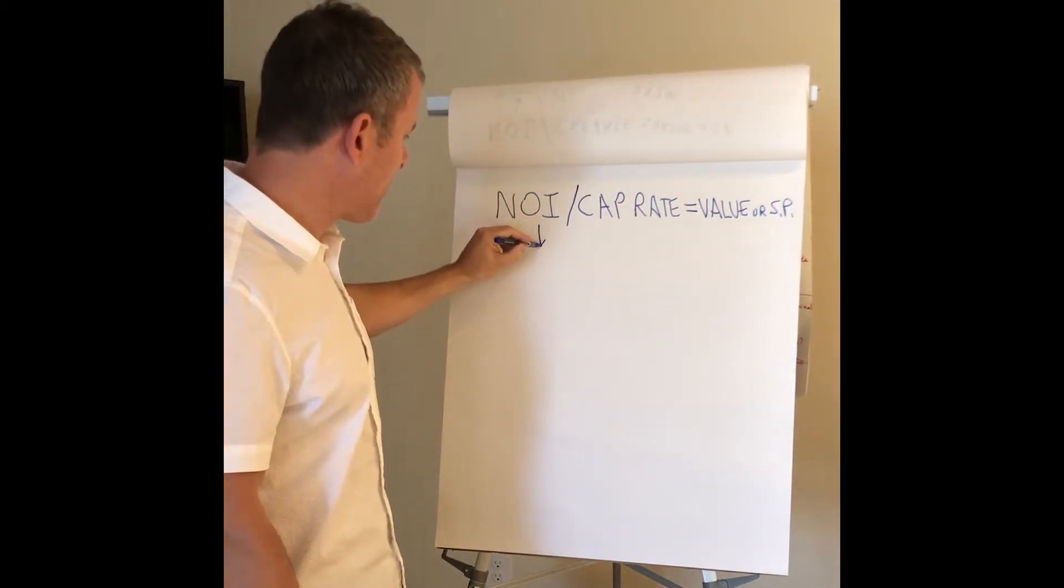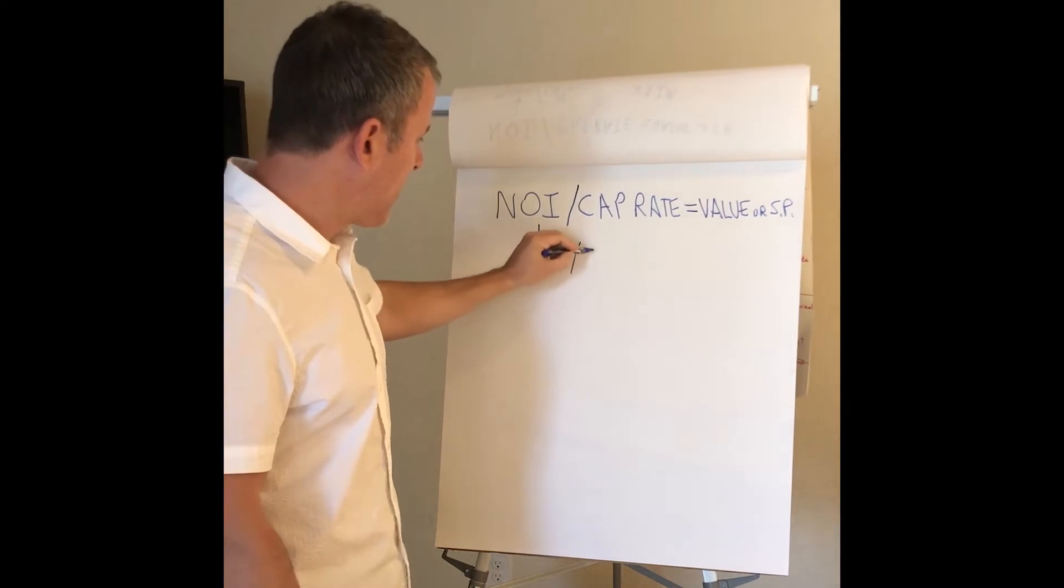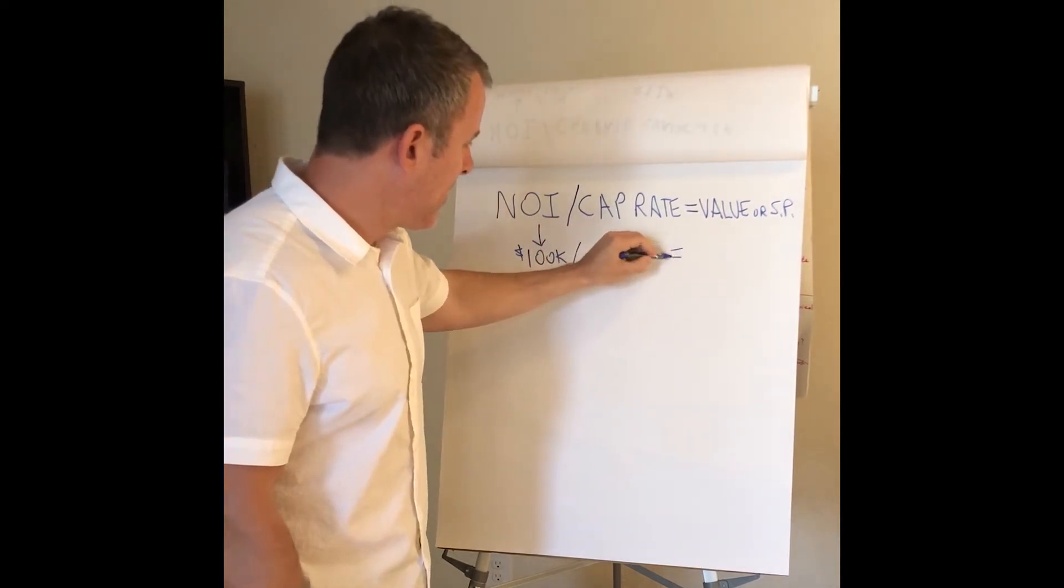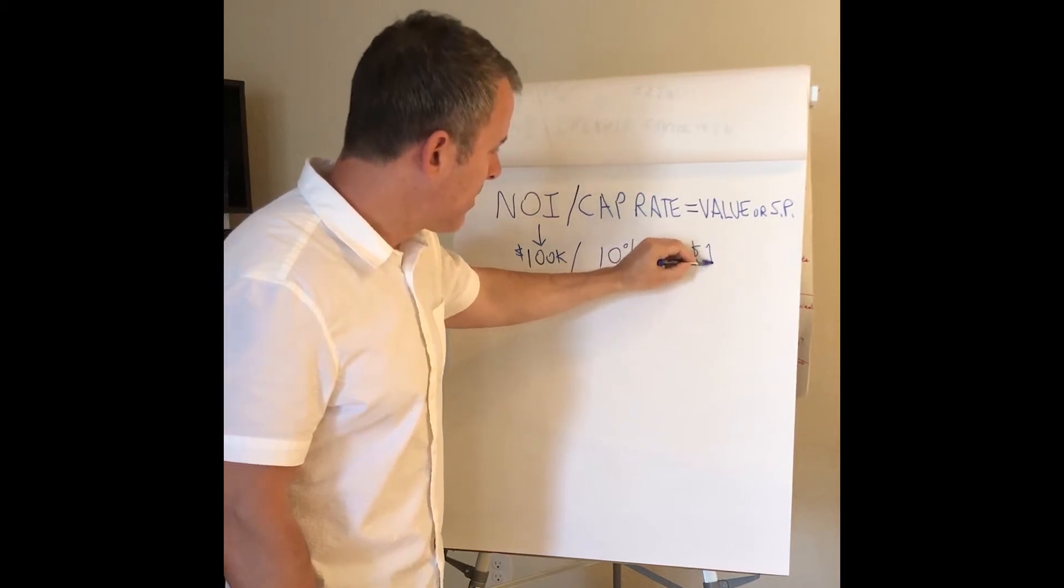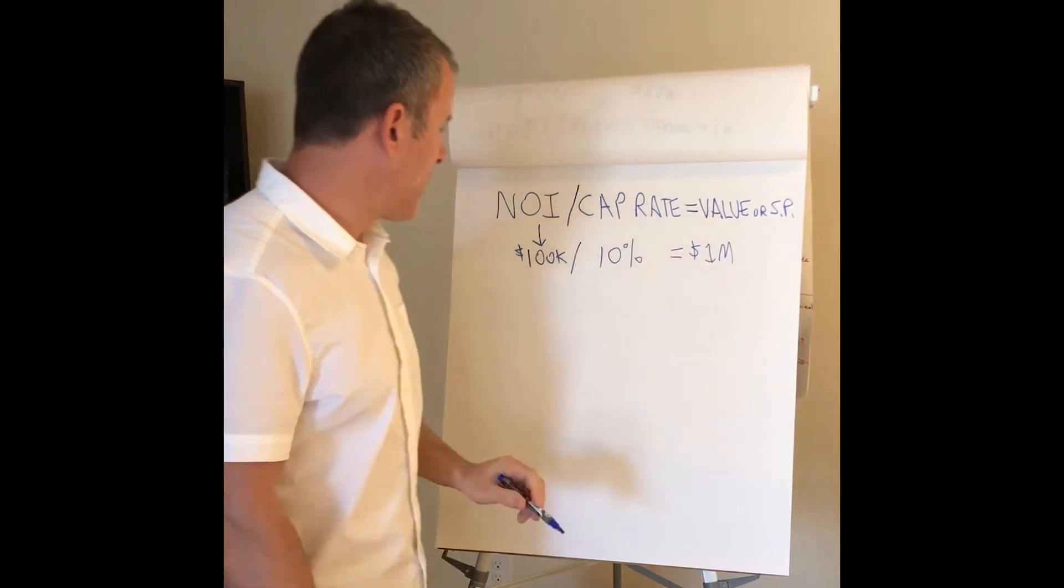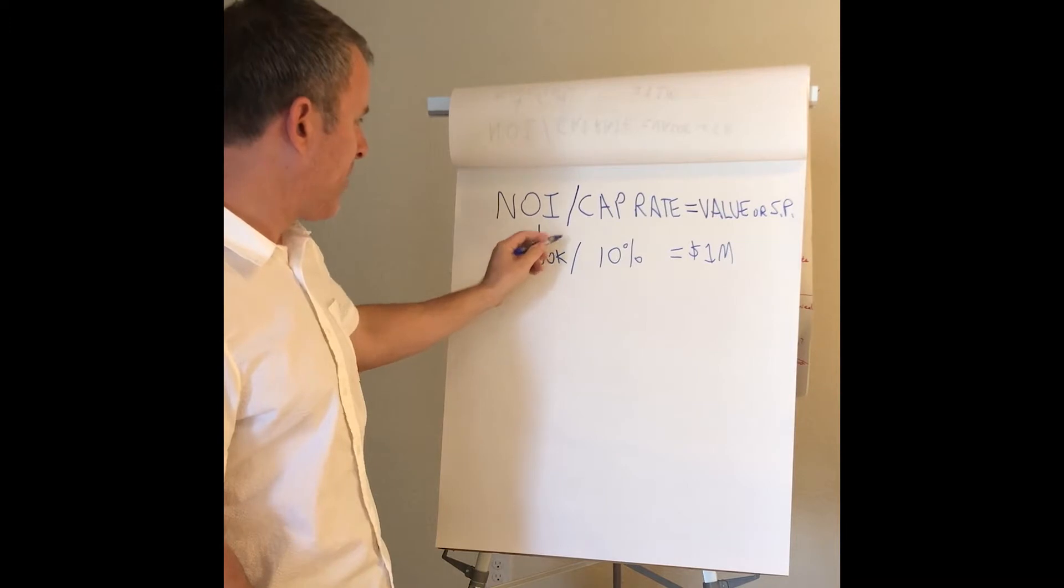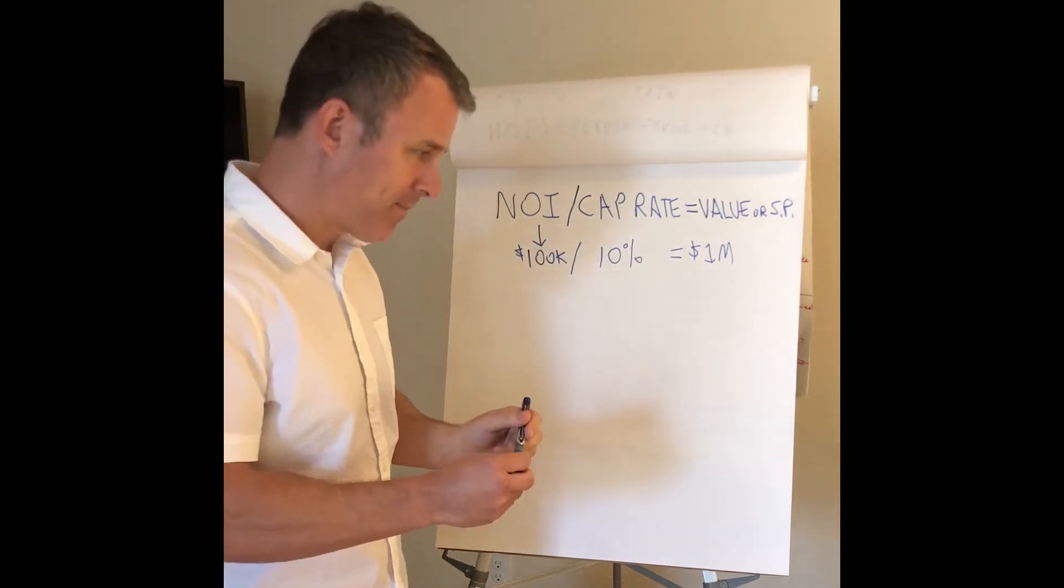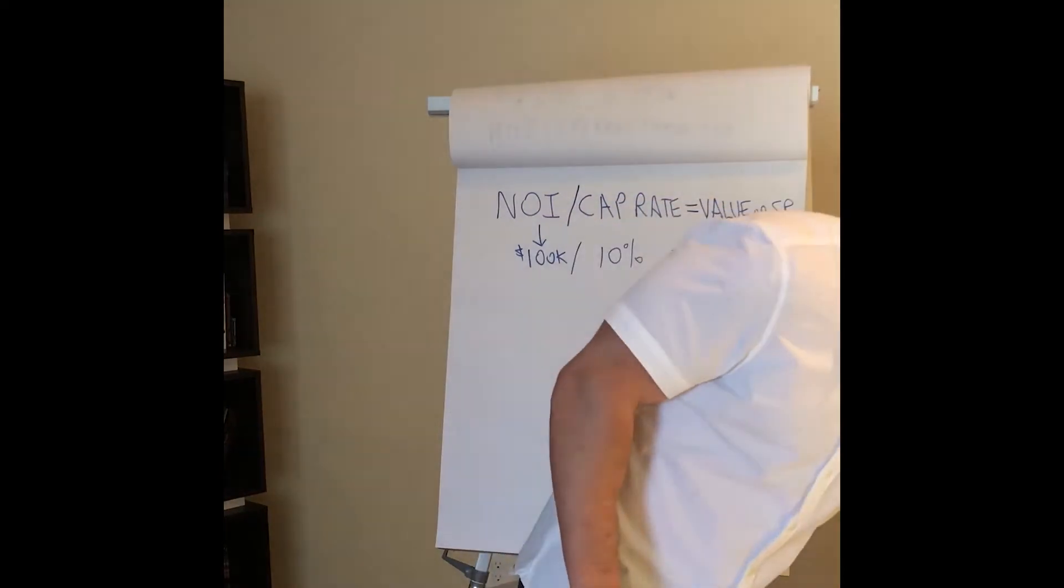So if I take this as an example, if I have $100K in my NOI, divide by 10% cap rate to make the math easy, that equals a value of $1 million. So NOI of $100K divided by 10% cap rate equals a value of $1 million. Pretty simple there.